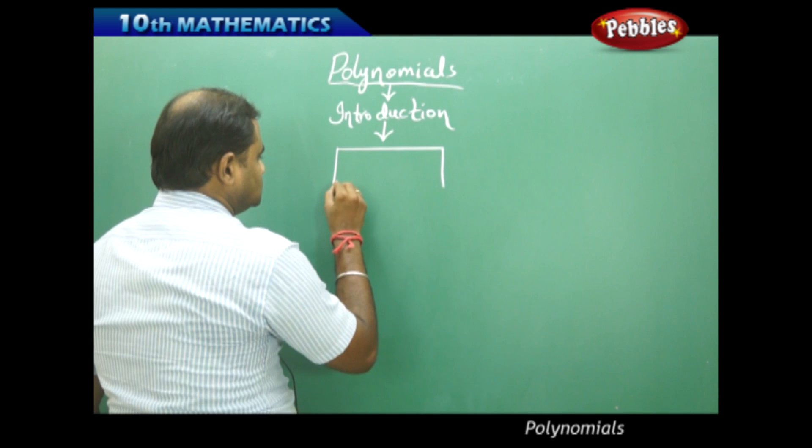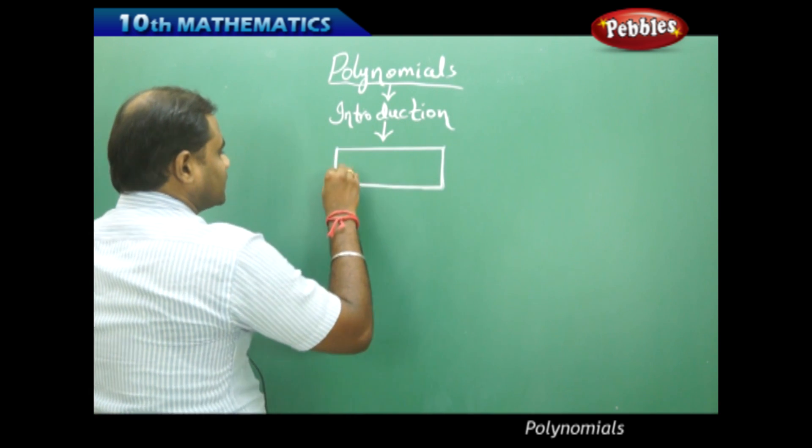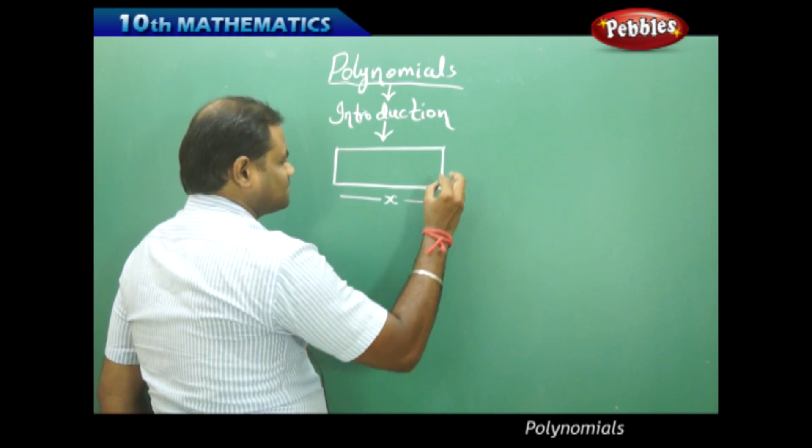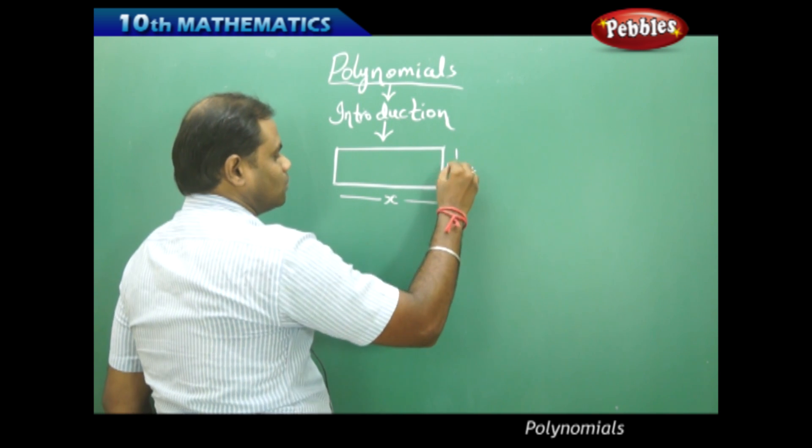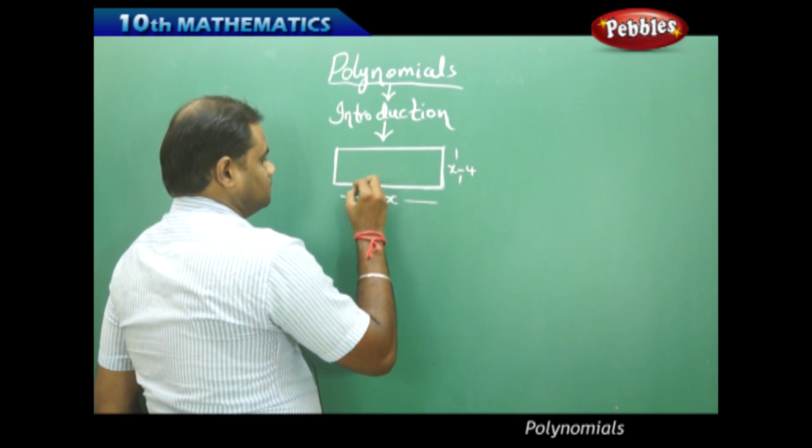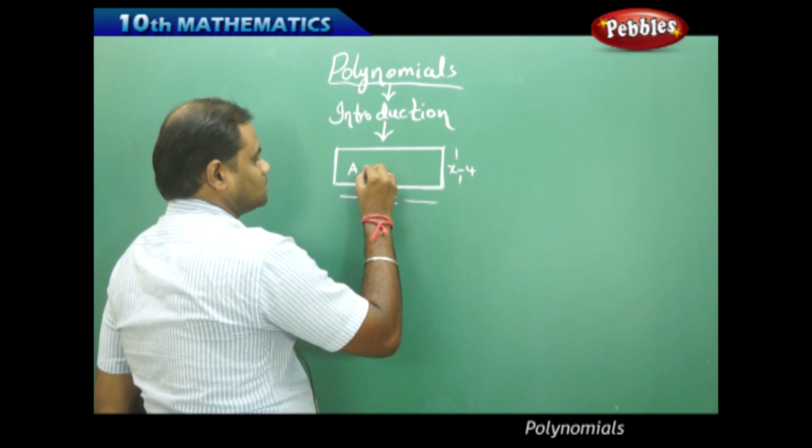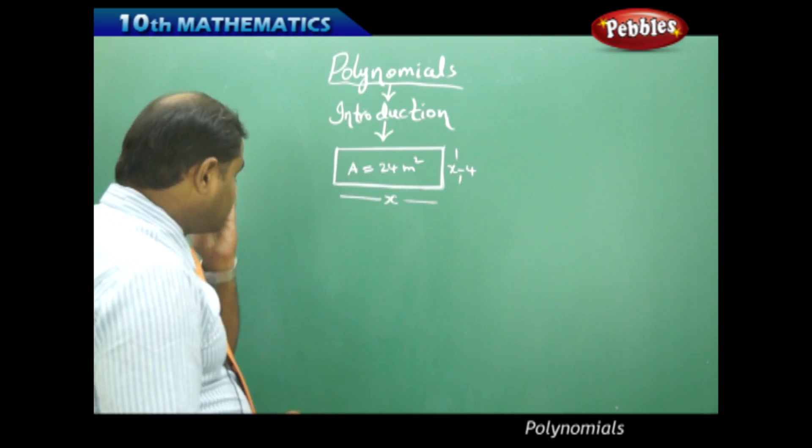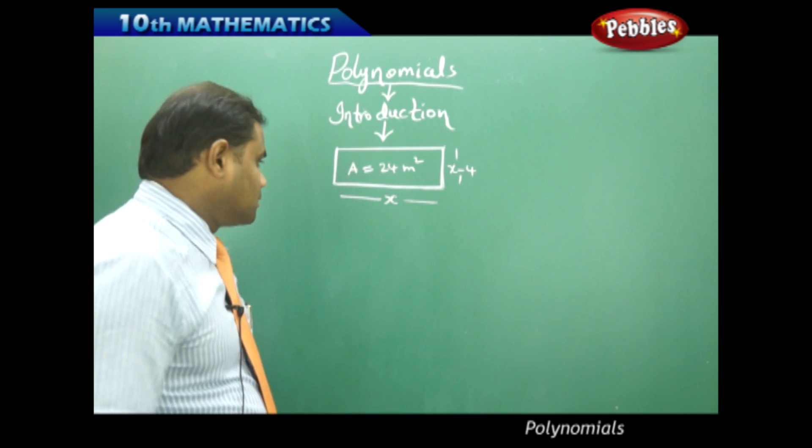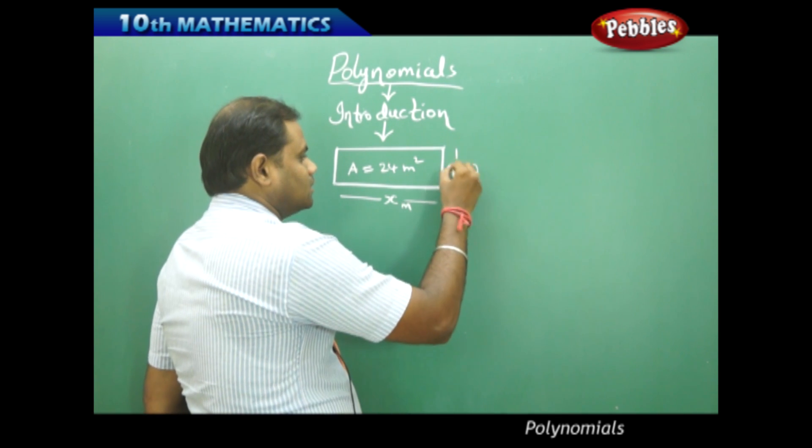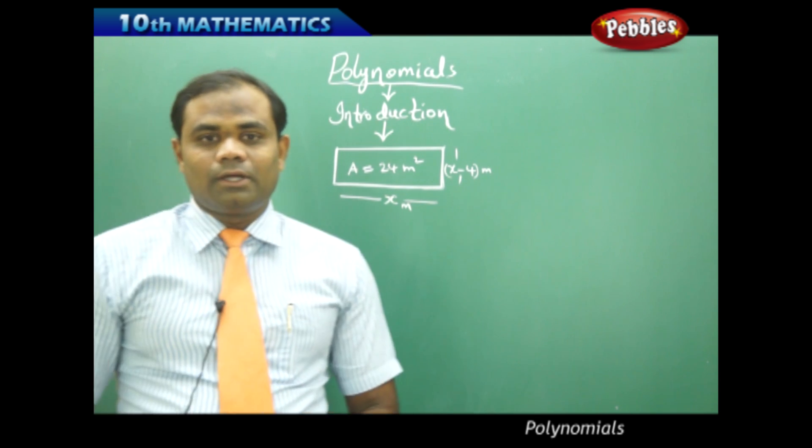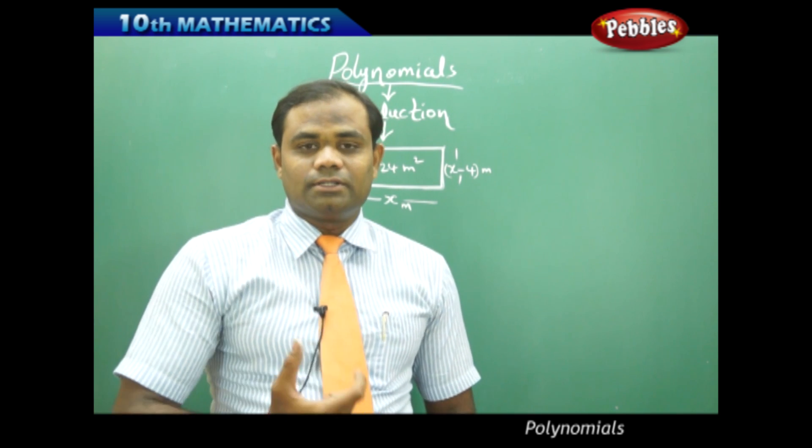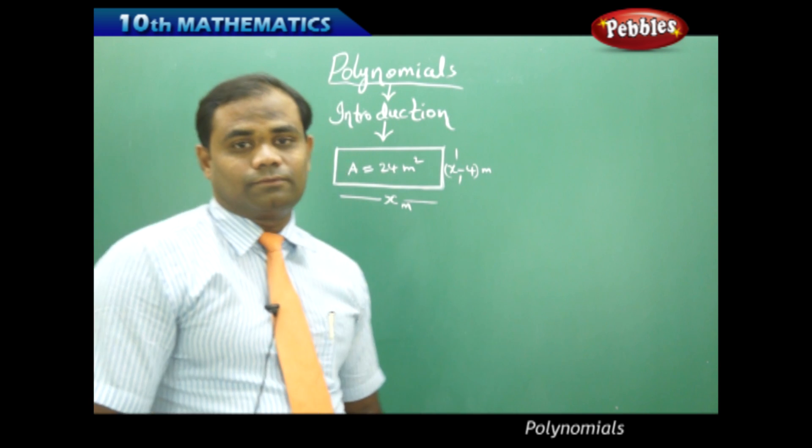I have a rectangle with dimensions length being x and the width being x minus 4, and the area is 24 meters squared. When the area of the rectangle is given to be 24 meters squared and my length is x meters and my width is x minus 4 meters, then I can derive a polynomial out of this situation in mathematics. Let's see how we can derive a polynomial or an expression out of the given conditions.